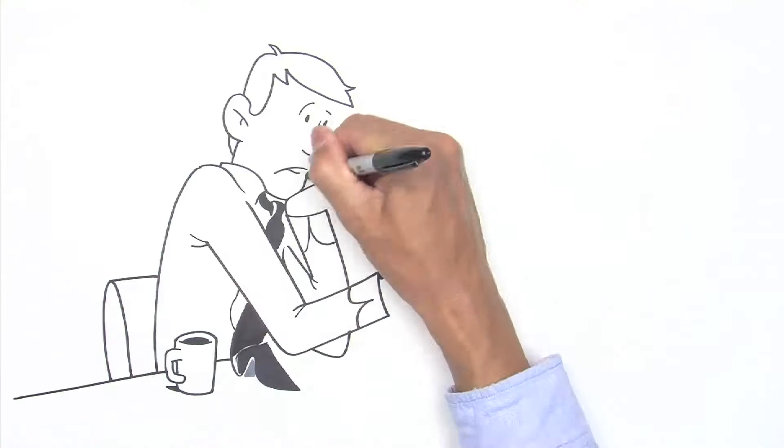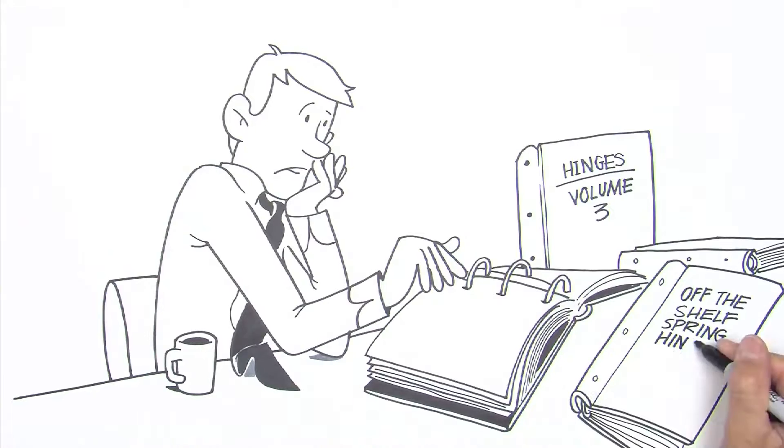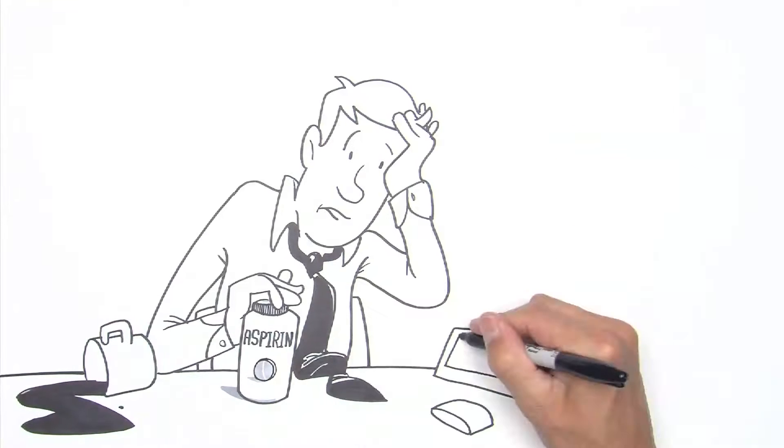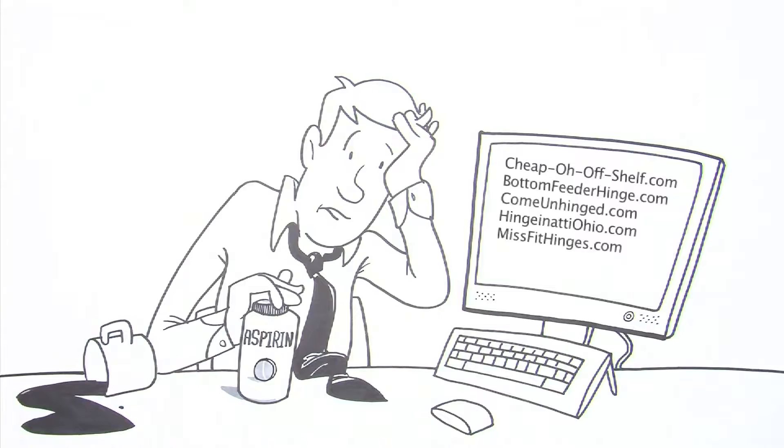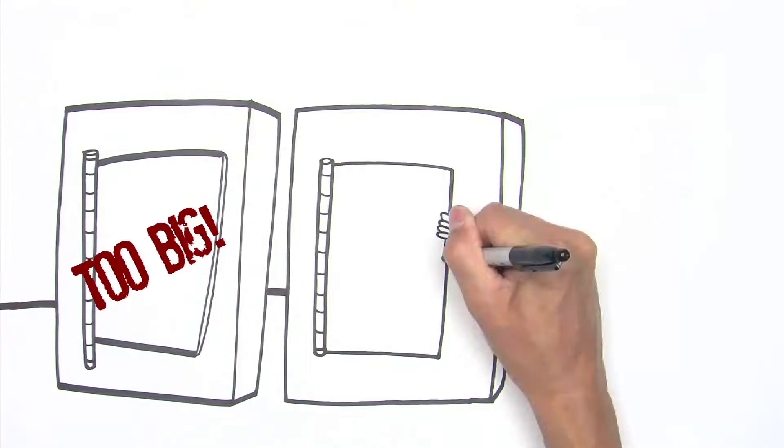It seemed so easy, close the door on your project, so to speak, with a simple off-the-shelf spring hinge. Three doors and three hinges later, life's not so easy. Door number one, hinge too big. Door number two, hinge spring too tight.